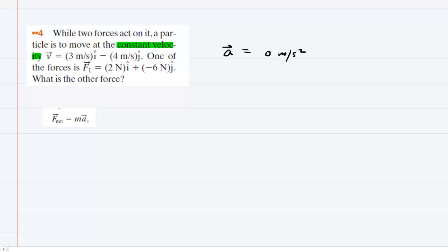For the net force, we actually have two forces acting on this particle. We have the force given in the question denoted F1, and then we would add that to this unknown force F2 that we are trying to find in this problem.